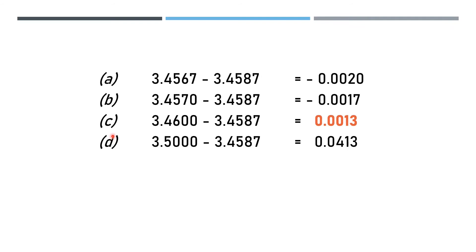With respect to option C, that is 3.46, the difference is 0.0013. Finally, with respect to option D, that is 3.5, the difference is 0.0413.